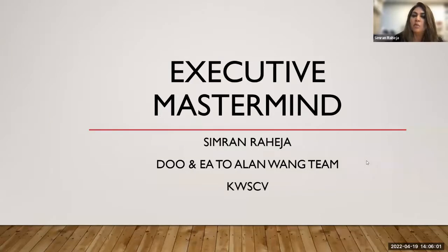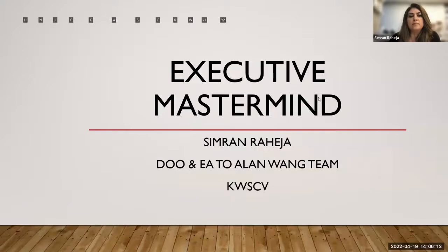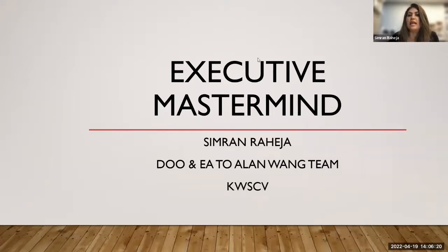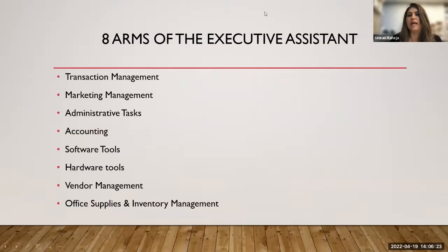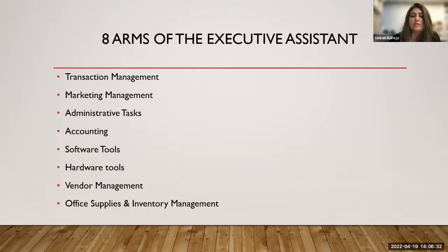Moving on to the first screen, where we cover the overview of everything under the executive portfolio. The eight arms of the transaction as an executive assistant are: we cover transaction management, some marketing management, some administrative tasks, accounting, some software tools, hardware tools, vendor management, and a lot of office supplies and inventory.